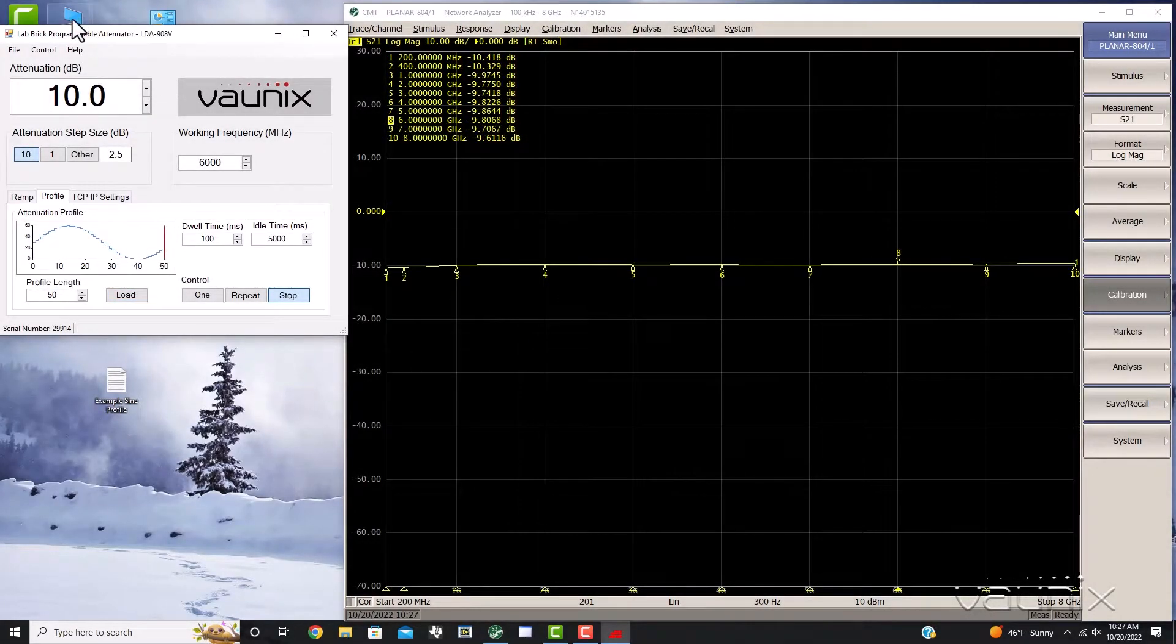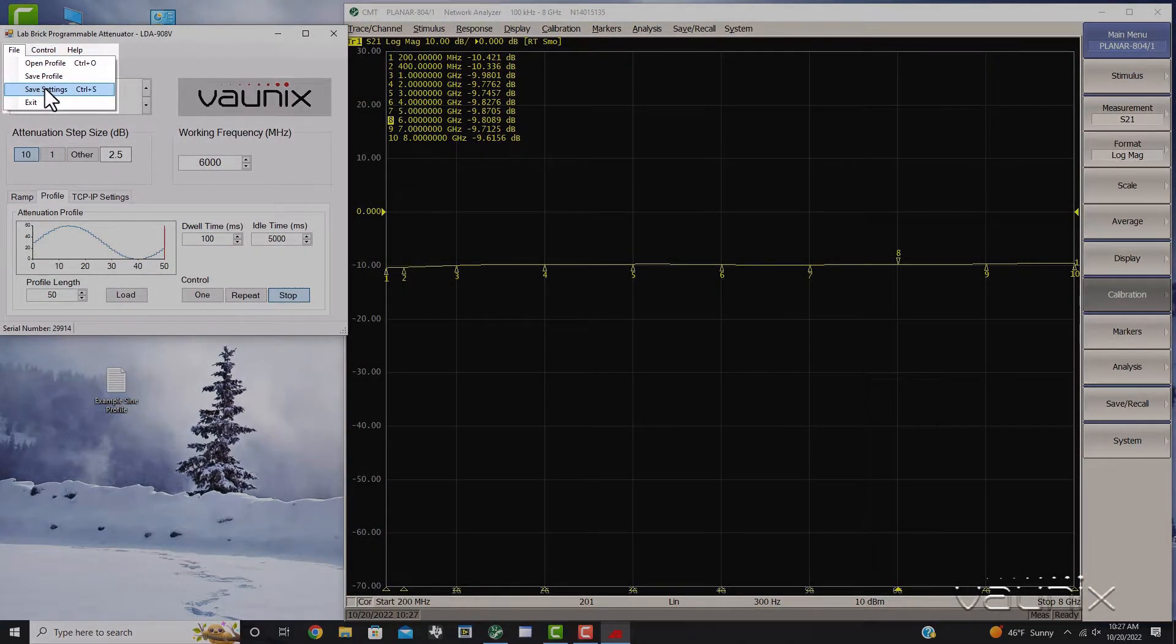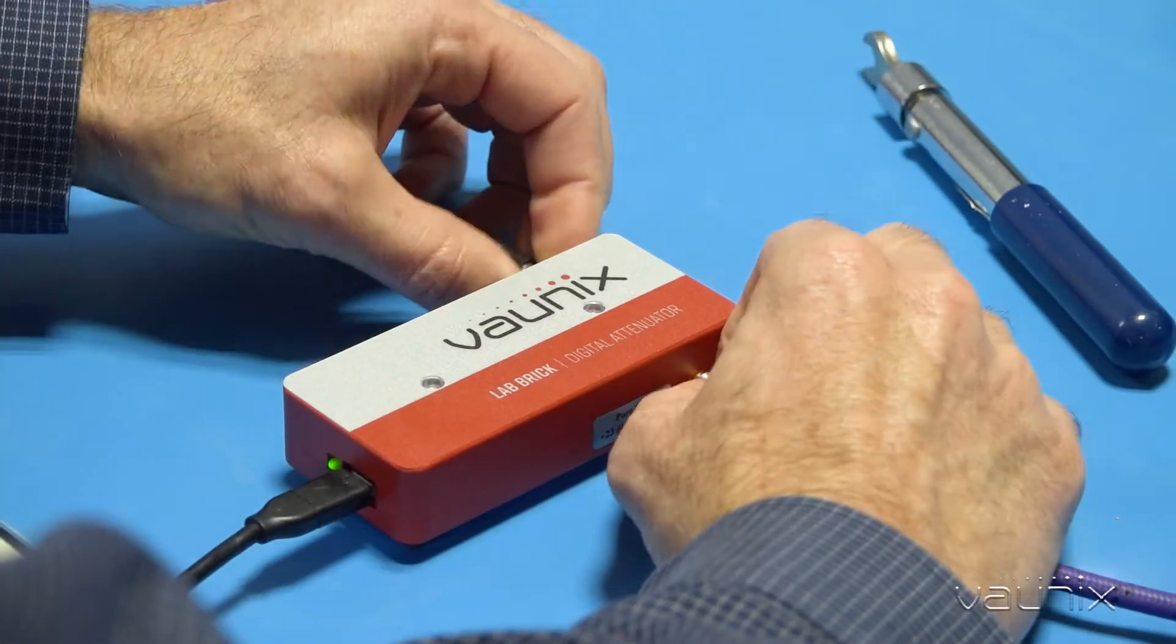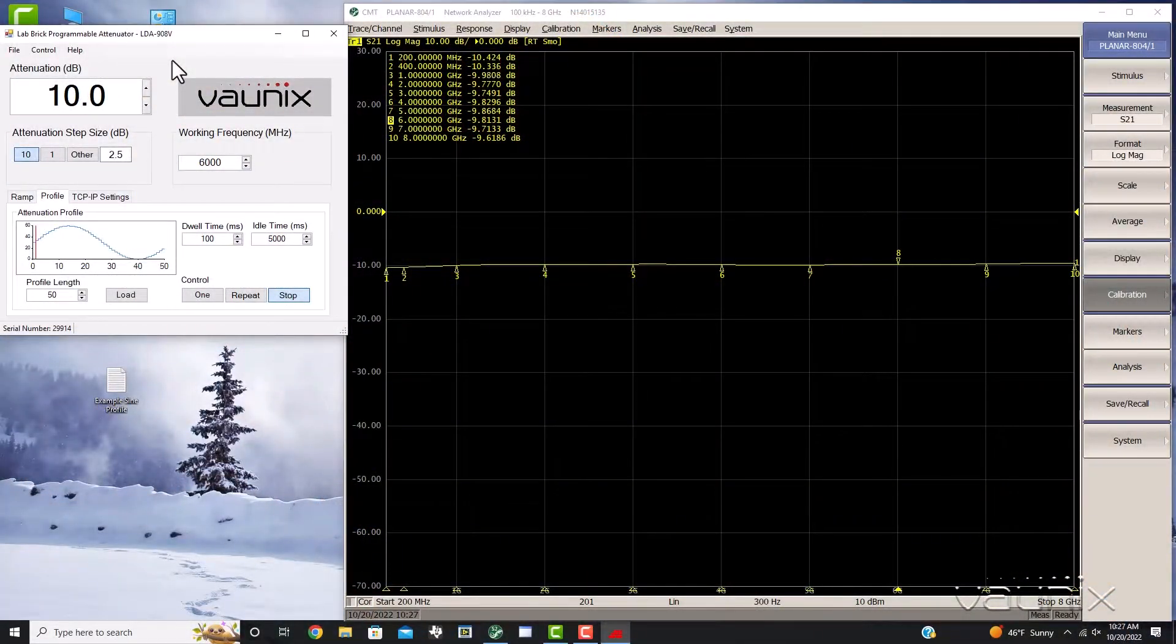You can save settings by clicking on the file menu and selecting save current settings, and they will be stored within the attenuator, so that the next time you power up the device, the attenuator will begin at the predefined state.